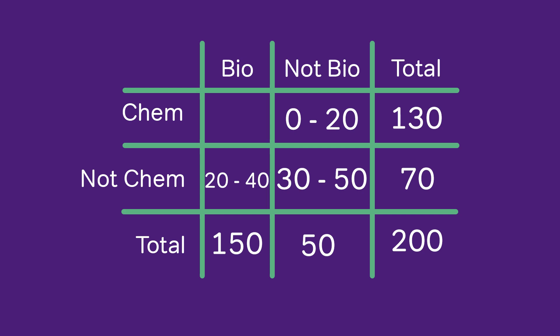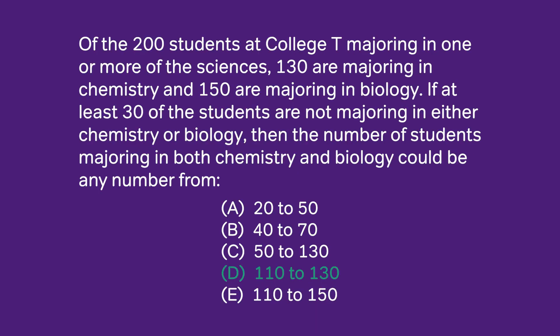And so it means that the folks that are majoring in both chem and bio could range from 110 to 130. And that checks out both as we go across the chem row and down the bio row. And so that is the answer, answer choice D.